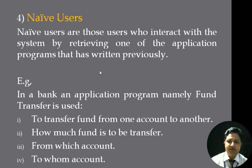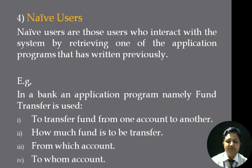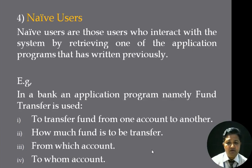Last are naive users. Naive users interact with the system by retrieving or accessing application programs that have been written previously. For example, in a bank there may be an application program called fund transfer. Its roles include: transferring funds from one account to another, specifying how much is to be transferred, from which account, and to which account. So naive users interact with the system simply by calling or accessing pre-written application programs.